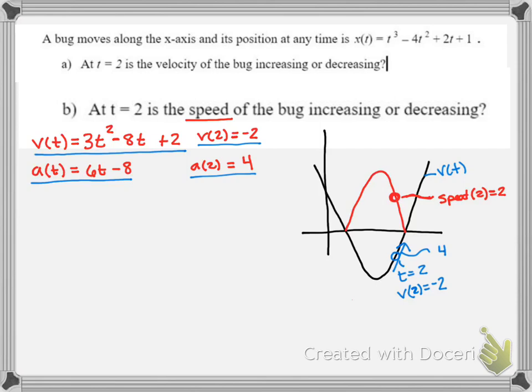As we thought about, the derivative of speed will tell us if speed is increasing or decreasing. Now we can see the slope of the tangent line is negative.